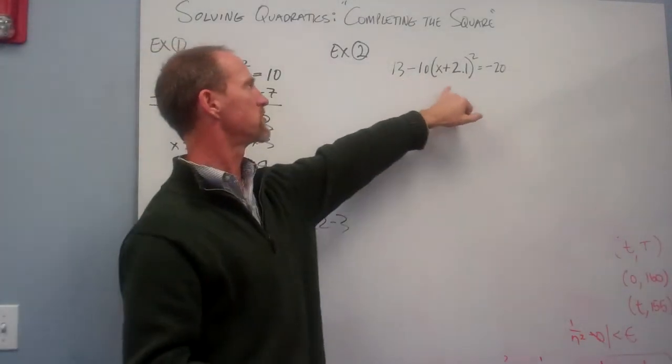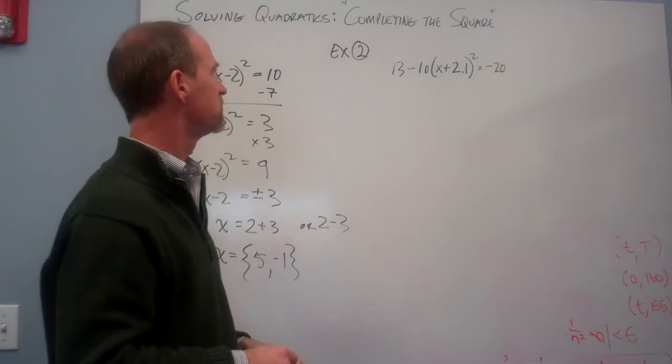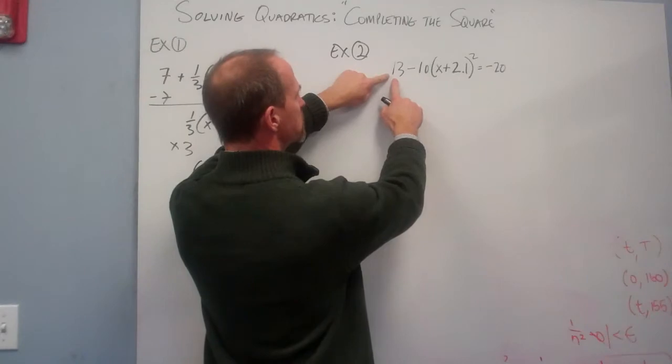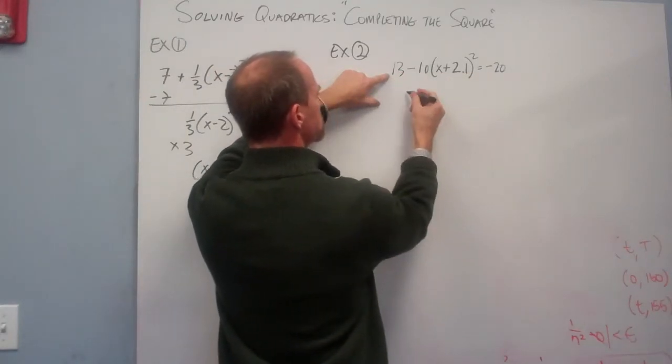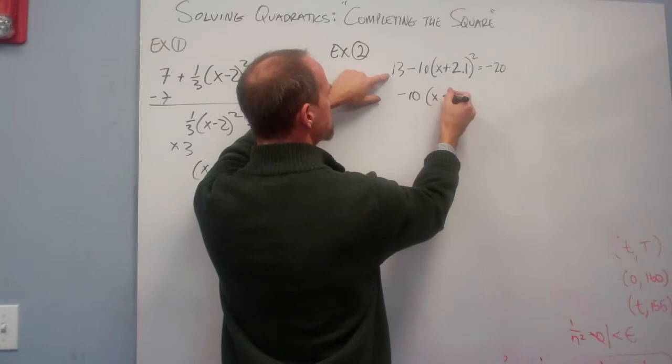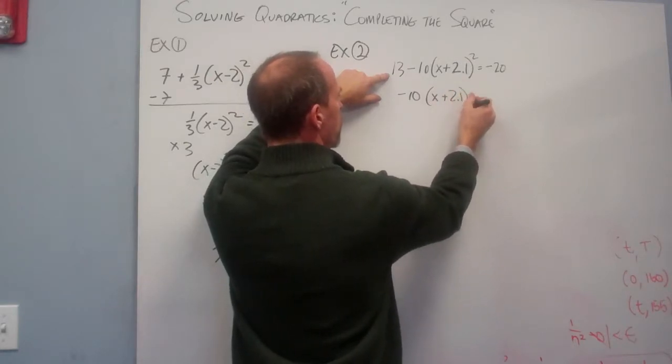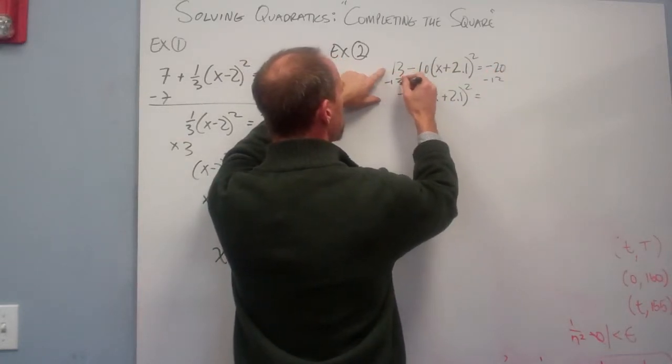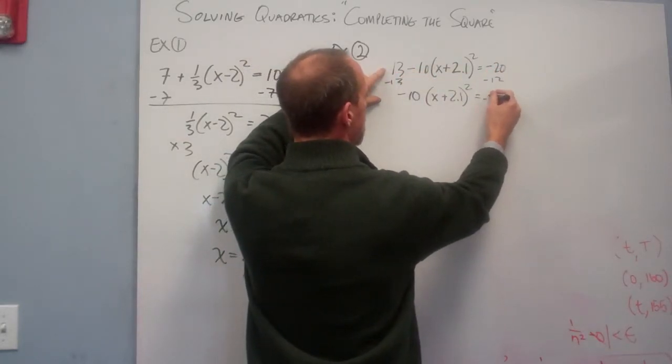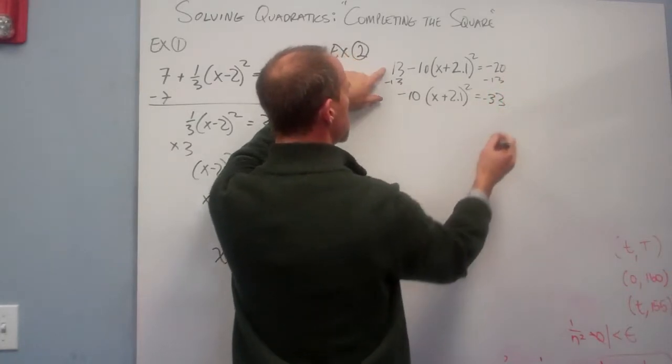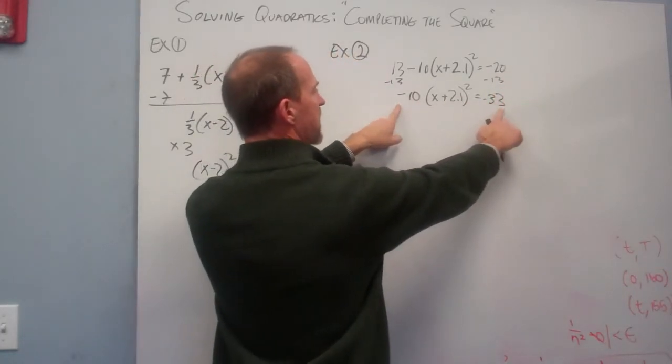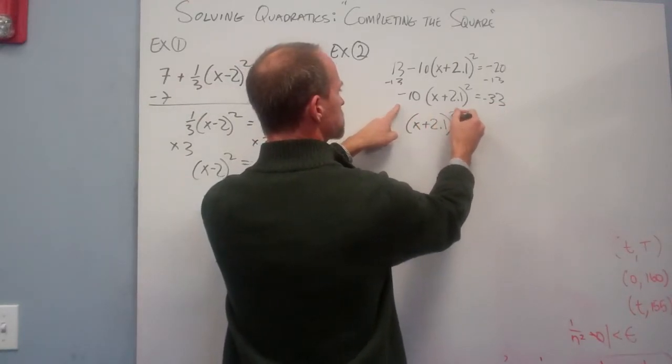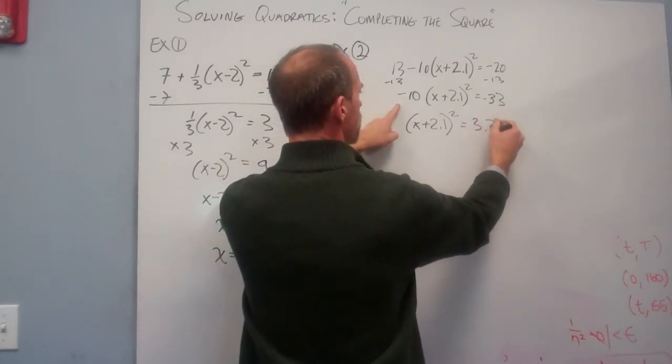So I just kind of put in random numbers here and you'll see it's not going to be a pretty solution, but it is going to be a mathematically correct solution. So again, working from the outermost layer to subtract 13 from both sides, I get minus 10 and then x plus 2.1. It's okay to have decimals. And I'm going to take away 13 from 20 and I get minus, that's a 13 minus 33. And now I'm going to divide both sides by negative 10. So I get then x plus 2.1 squared equals positive 3.3.